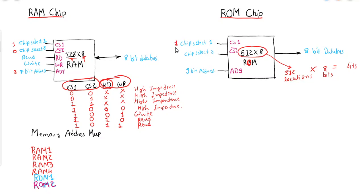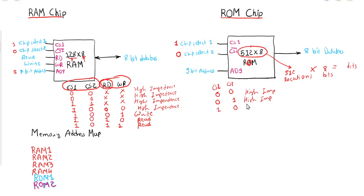For the ROM chip to work, chip select one should be 1 and chip select two should be 0. The function table is: CS=0,0 → high impedance; CS=0,1 → high impedance; CS=1,0 → connected and data transfer (read) operation is performed; CS=1,1 → high impedance state again.